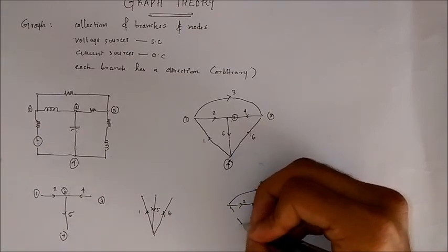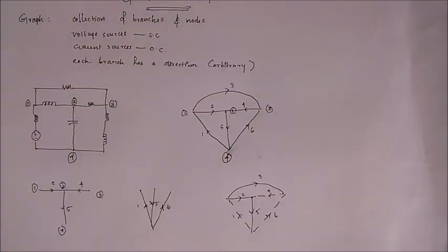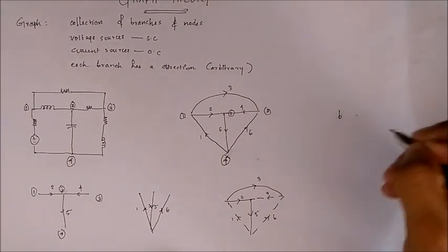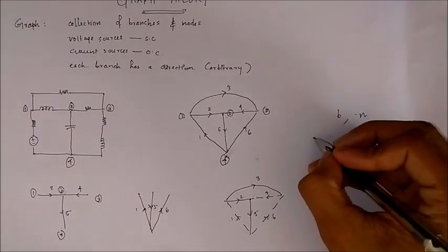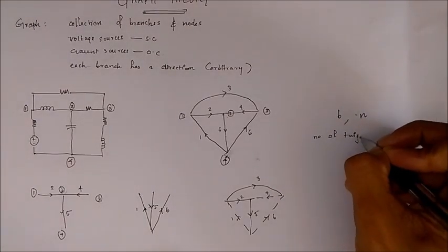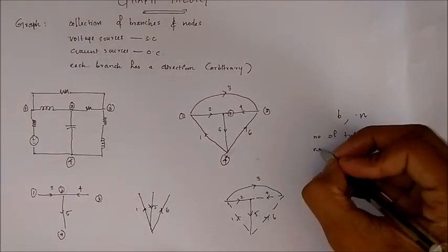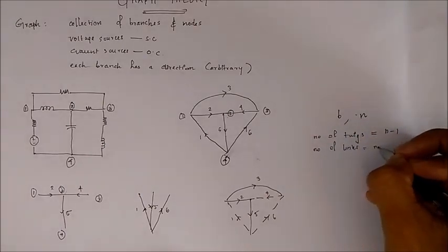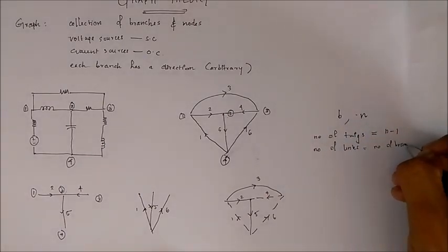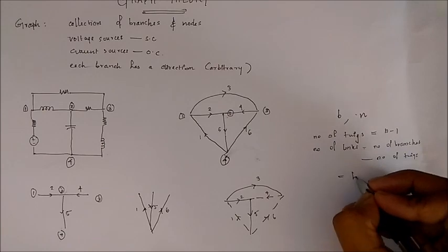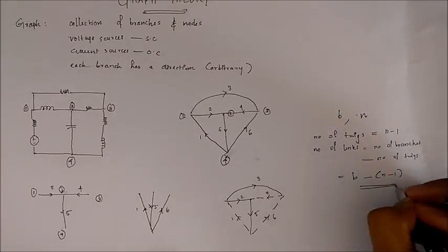If we are given a graph with b branches and n nodes, then the number of twigs is equal to n minus one. The number of links is equal to the total number of branches minus the number of twigs, that is b minus (n minus 1). Now let's move on to node analysis using graph theory.